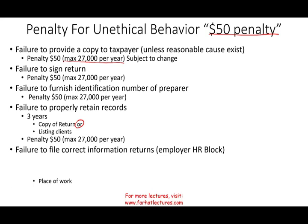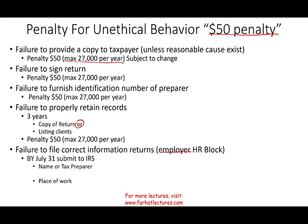Failure to file correct information returns applies on the employer end. For example, H&R Block, which has many people working for them, must submit to the IRS by July 31st the names of their tax preparers, their tax identification numbers, and the place they work.